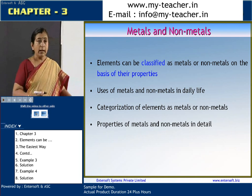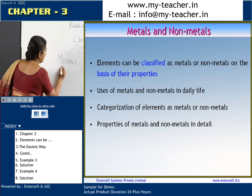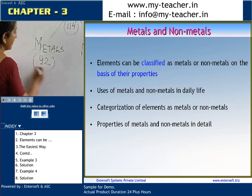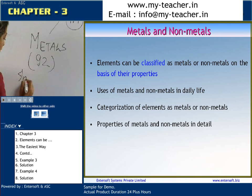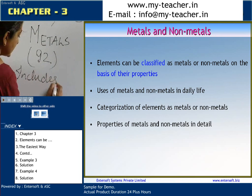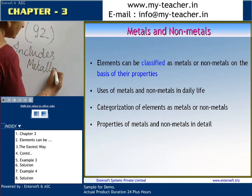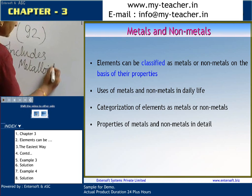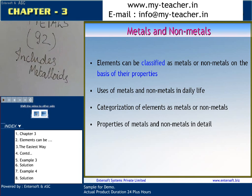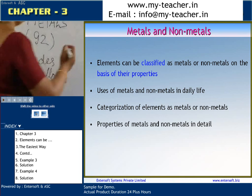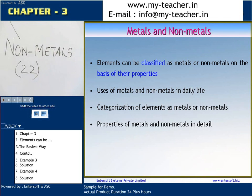There are 92 metals, which includes some metalloids. Coming to non-metals, we know about 22 known non-metals.